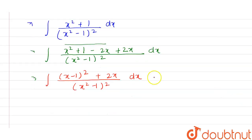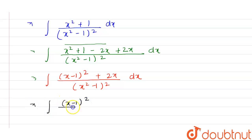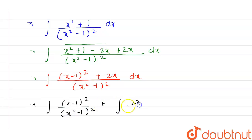Now we separate the terms. This is equal to the integration of (x - 1)² / (x² - 1)² dx plus the integration of 2x / (x² - 1)² dx.